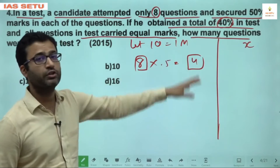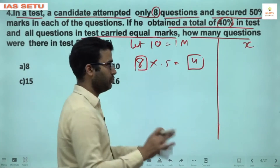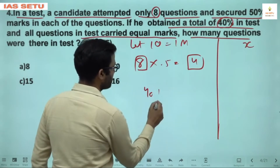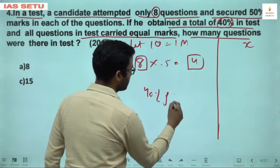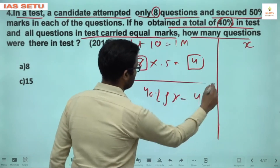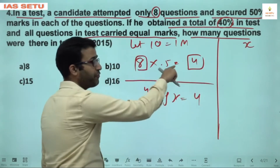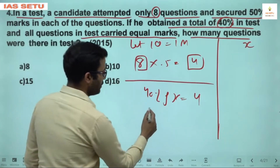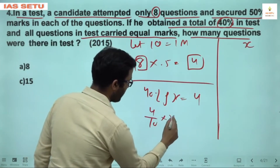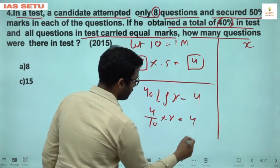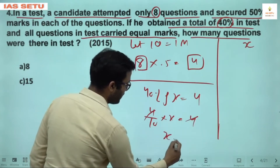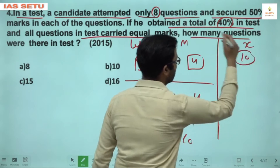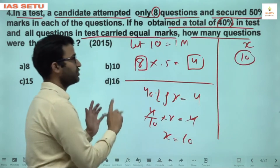These 4 marks represent 40% of the total number of questions X. So 40% of X = 4, which gives (4/10) × X = 4, so X = 10. The number of questions in the test was 10.